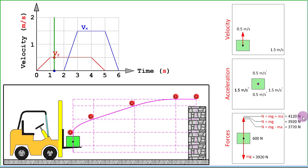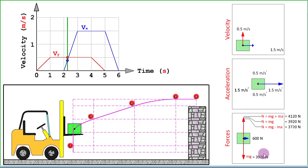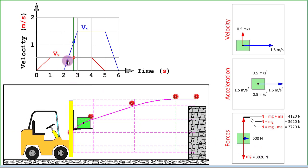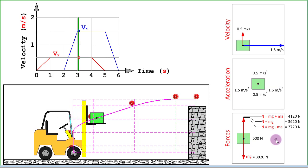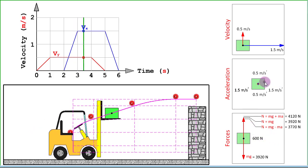From 1 to 2 seconds the upward acceleration has ceased — there is no acceleration, so there is no net force. Both normal reaction and weight are equal at 3920 newtons. Then between 2 and 3 seconds we accelerate in the horizontal direction, so there is a net horizontal force equal to ma: mass 400 kg, acceleration 1.5 m/s². That gives us 600 newtons of frictional force towards the right. In the next interval from 3 to 4 seconds there are no accelerations — all forces are balanced, so normal reaction and weight are equal.